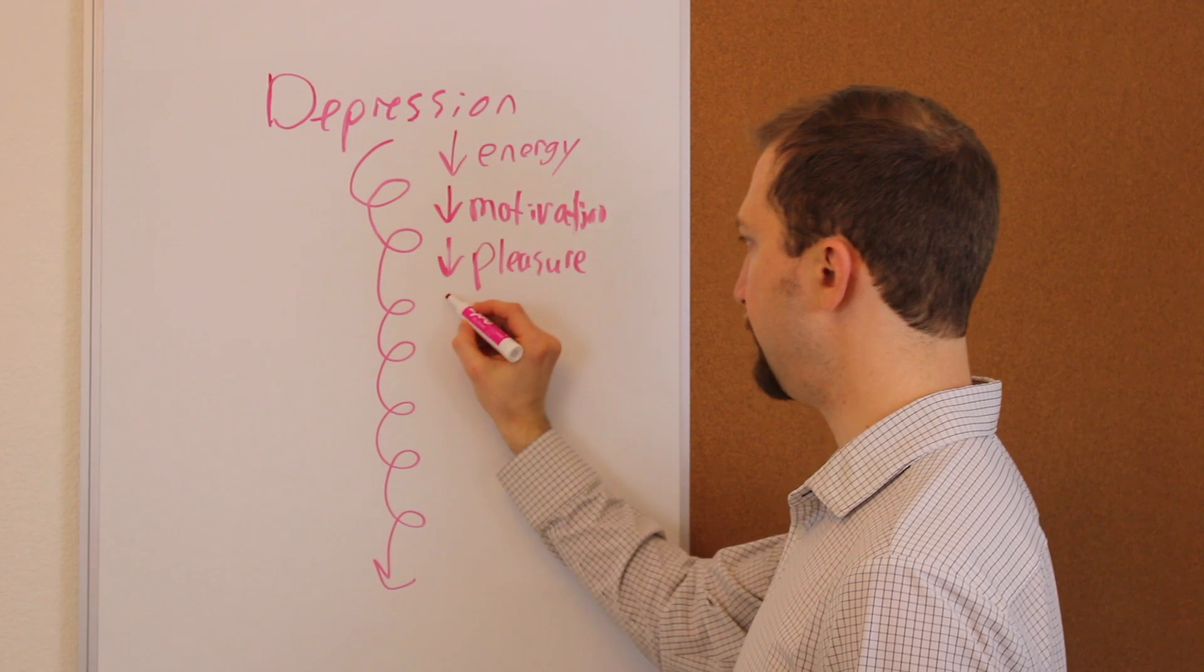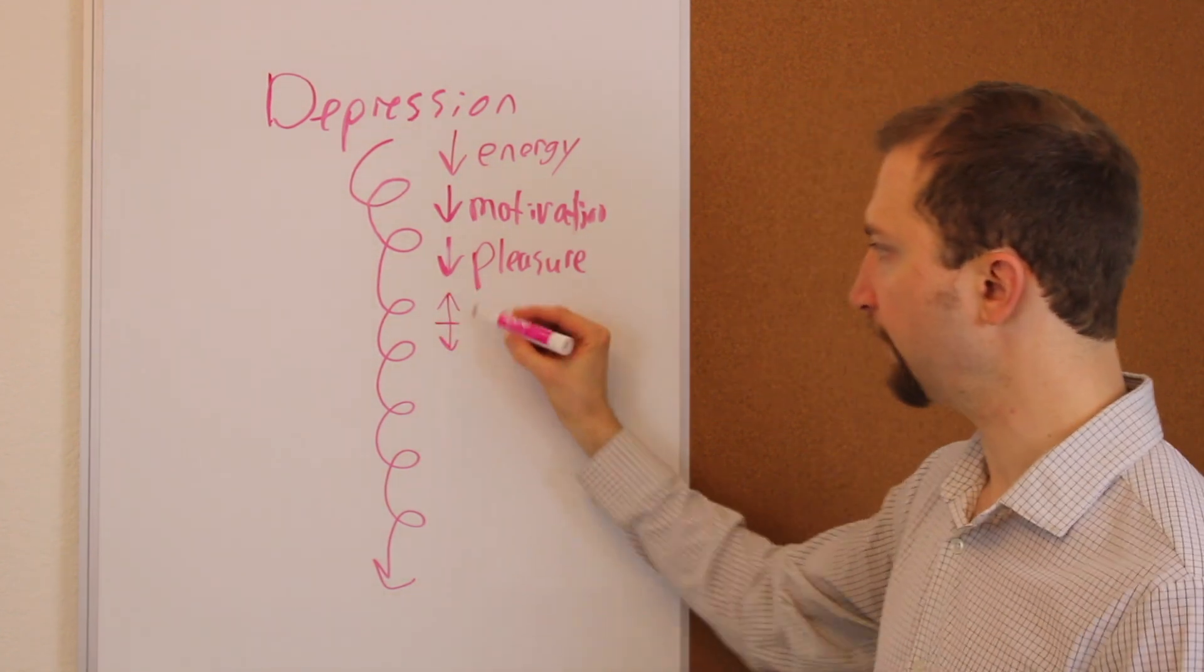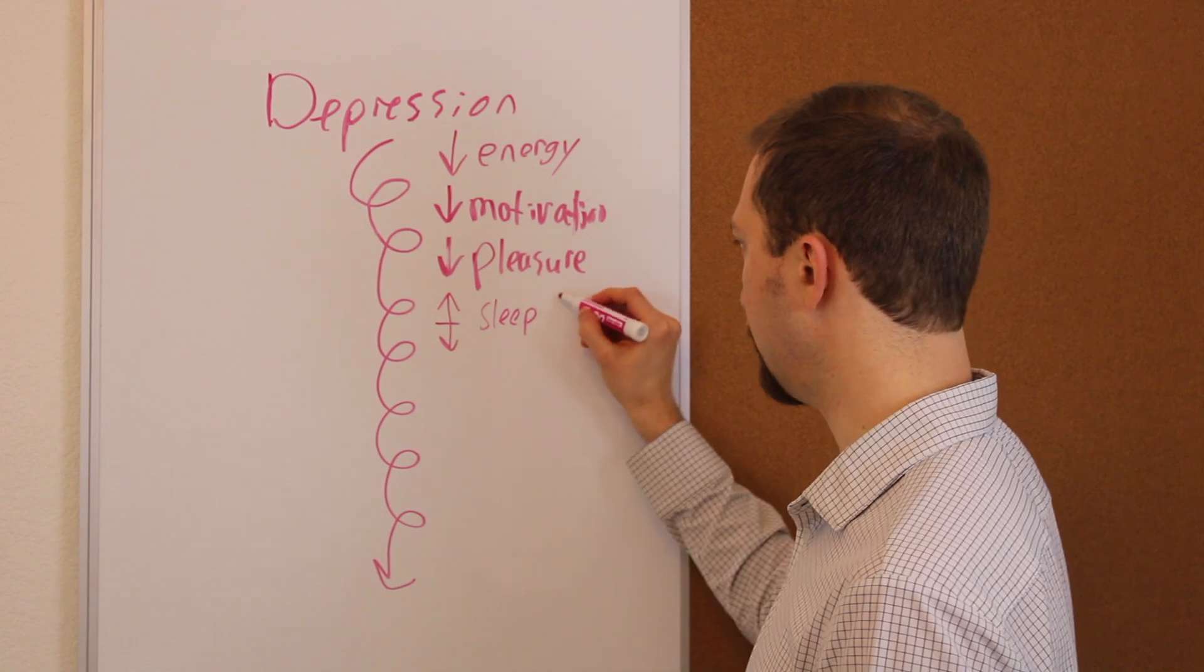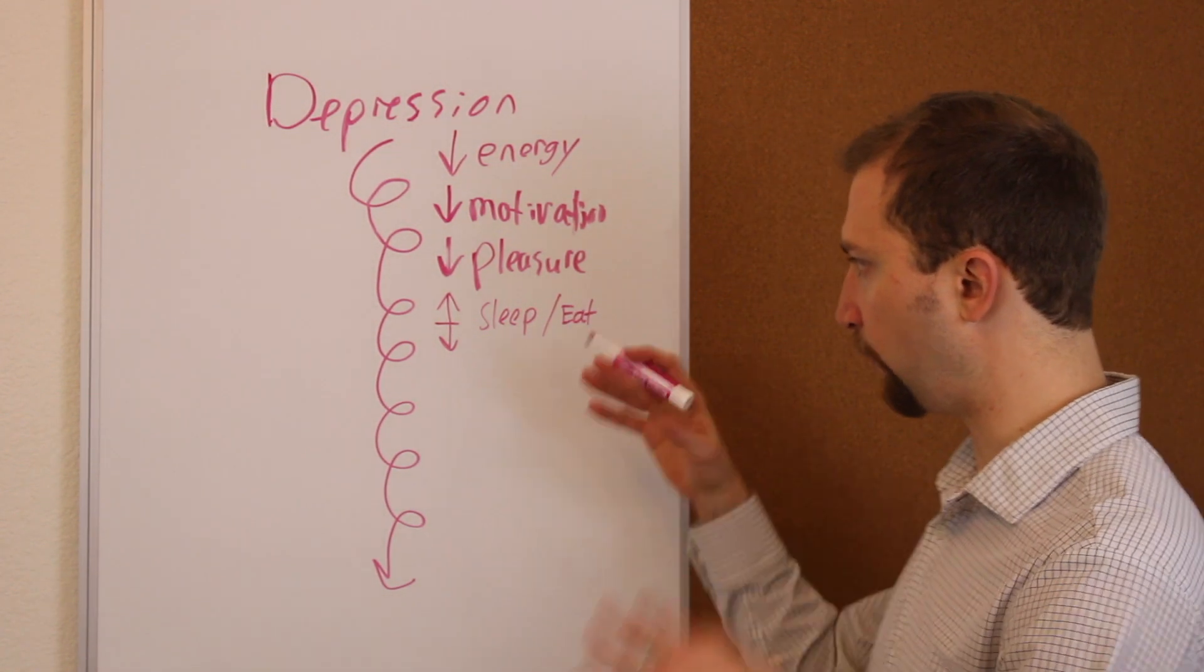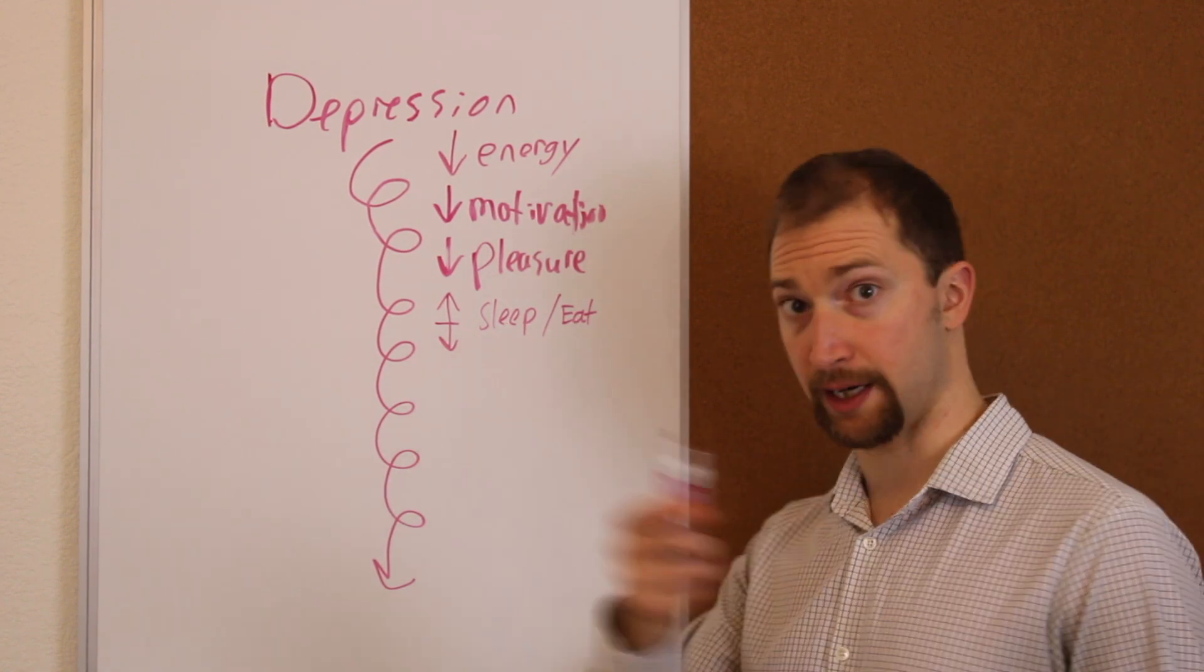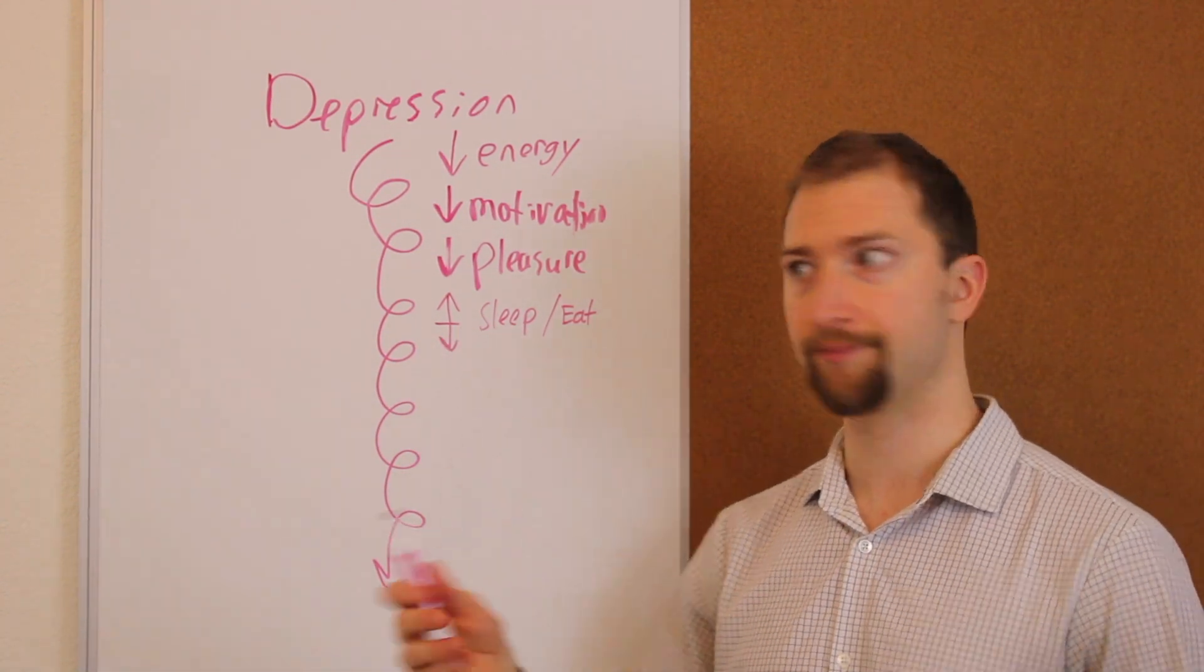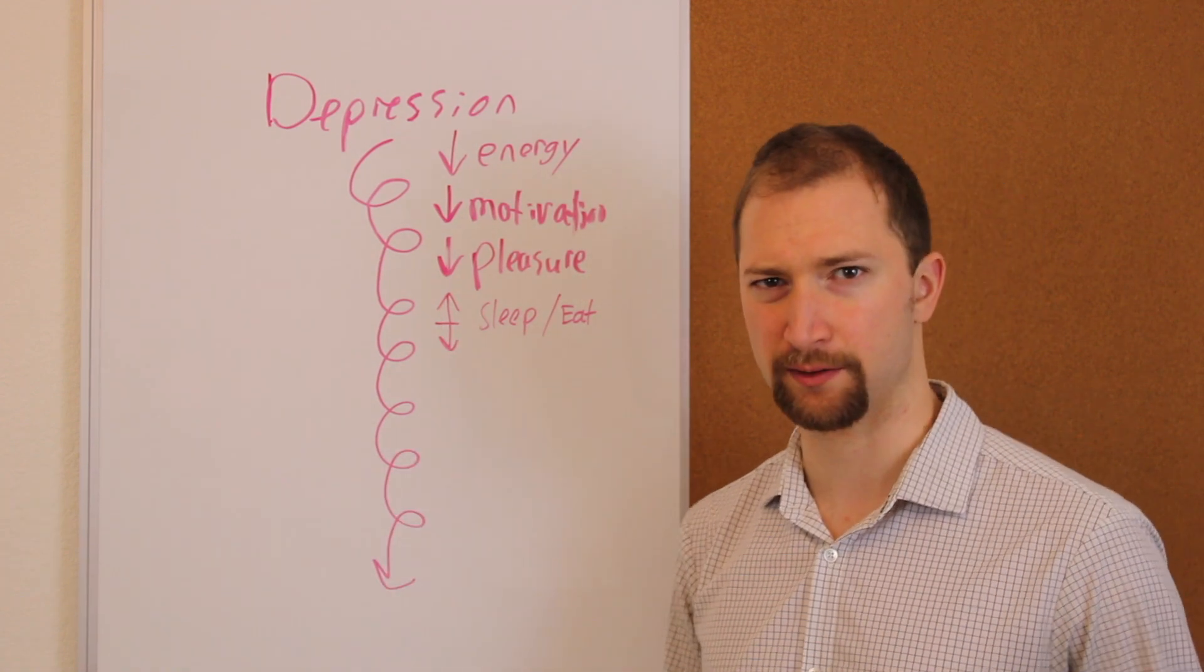The next symptom would be a drastic change—it could be up or down—in usually your sleep and your appetite habits. So your sleeping habits and your eating habits can kind of waver. A lot of times these are inverse. So for example, I get depressed, so my sleep will increase drastically more so than normal, but my eating will decrease. My appetite will be suppressed.